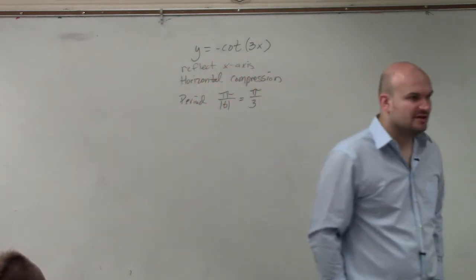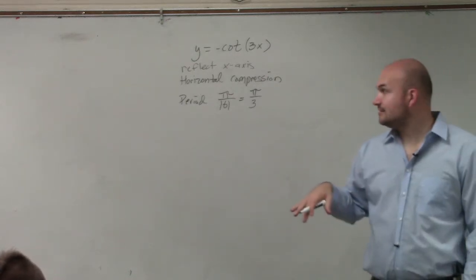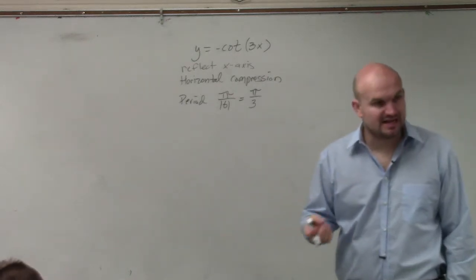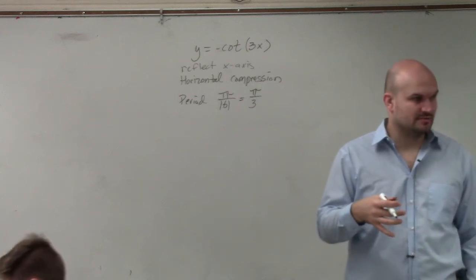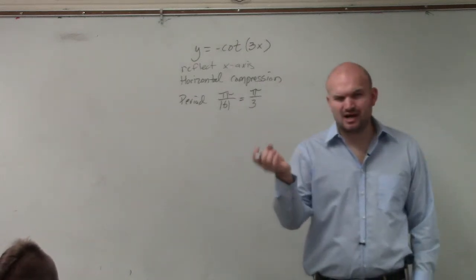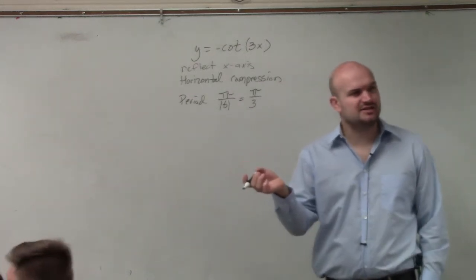Now, here comes the tricky part. It was saying that it wants us to identify where our asymptotes occur. If you guys remember, where did our asymptotes occur for the regular cotangent graph?